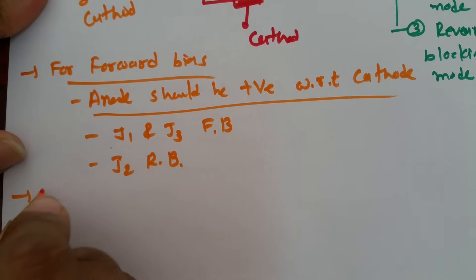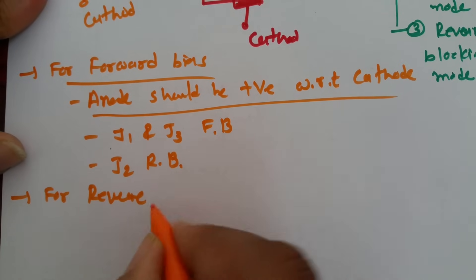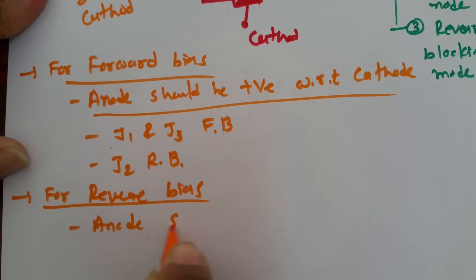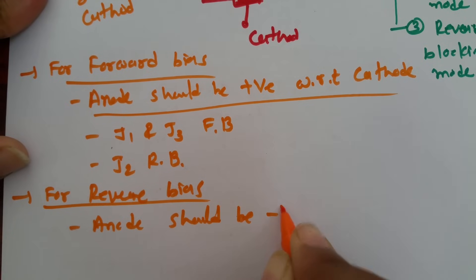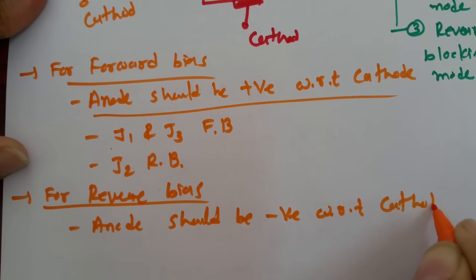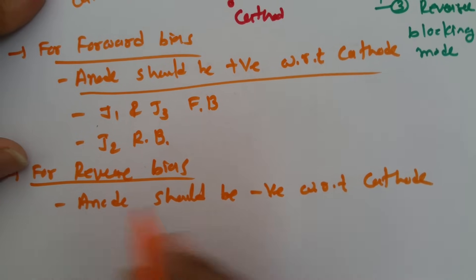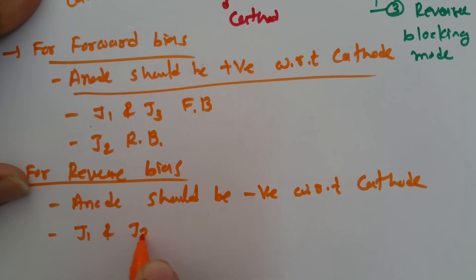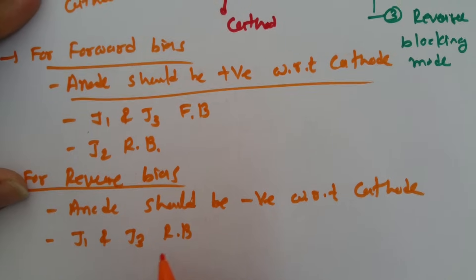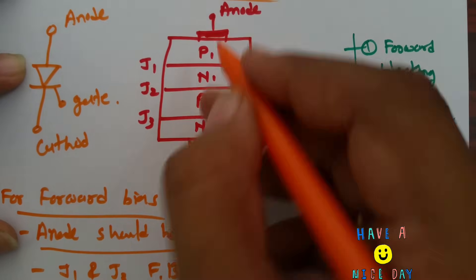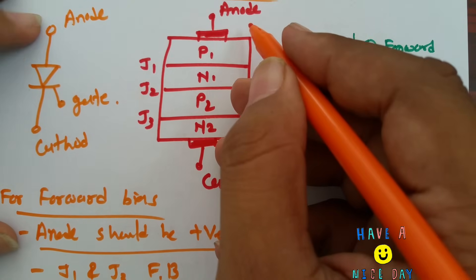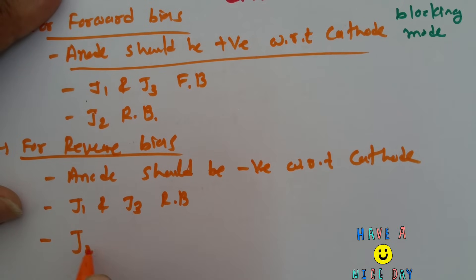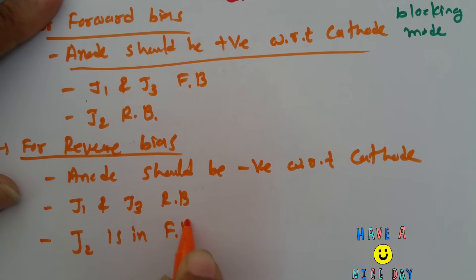For reverse bias, anode should be negative with respect to cathode. In that case, J1 and J3 junctions will stay in reverse bias during the reverse bias connection of SCR, and J2 junction will be in forward bias.